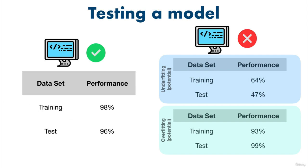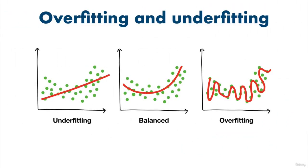Overfitting and underfitting are both examples of a model not being able to generalize well, which is what we don't want. The ideal model shows up in the Goldilocks zone — it fits just right, not too well but not too poorly. You can see here this machine learning model, if this was your data, these green data points, this line kind of fits the shape but this would be classified as underfitting. This is not what we want our model to do.